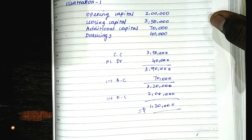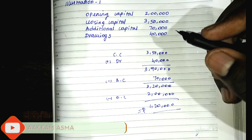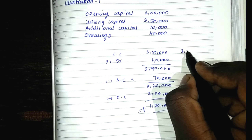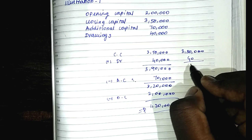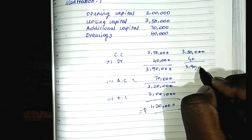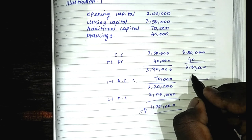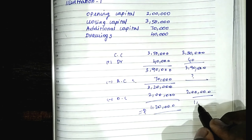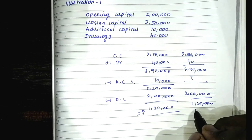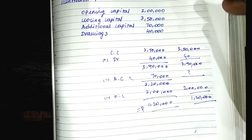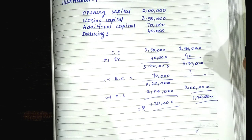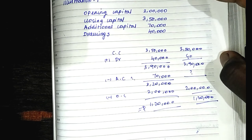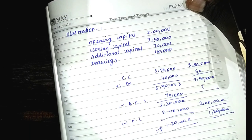For the missing figure, if you want to find additional capital, you can add 3,50,000 and 40,000 to get 3,90,000. Then add 2,00,000 plus 1,20,000. The additional capital is the answer. You can apply three methods for the easy approach.